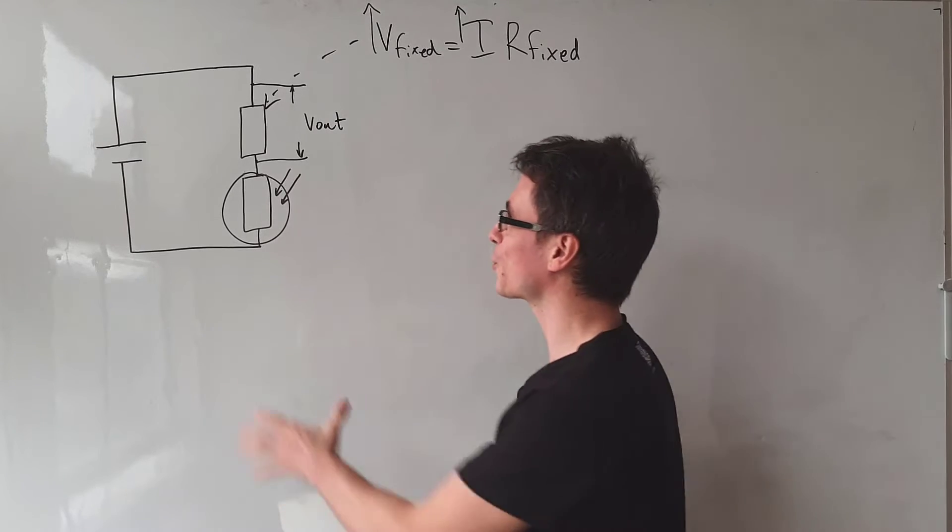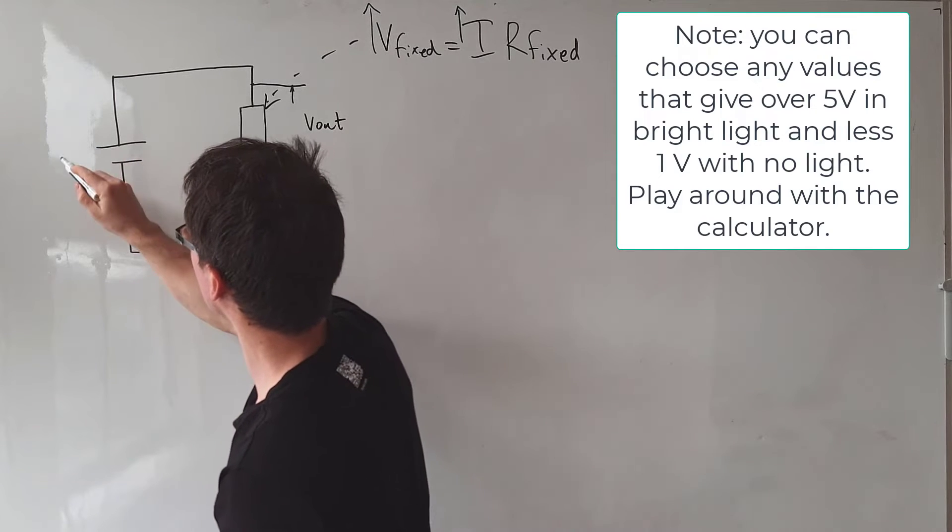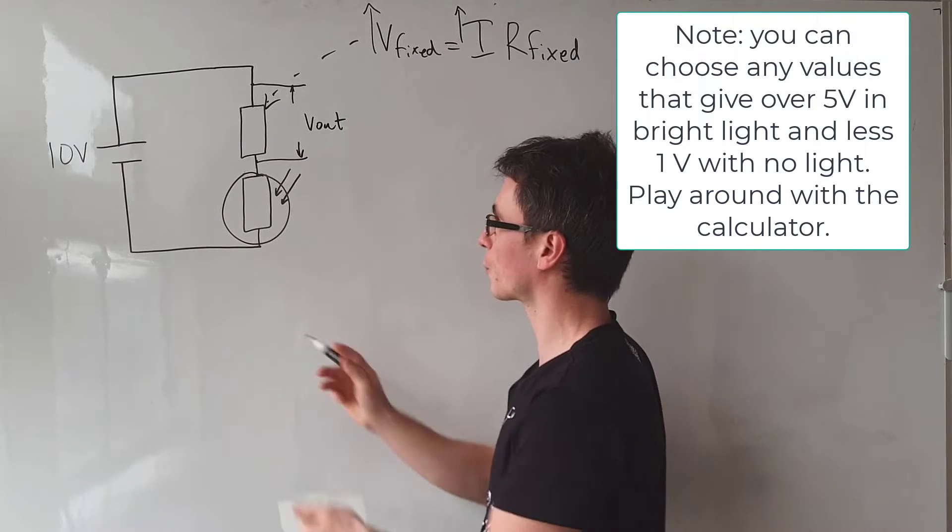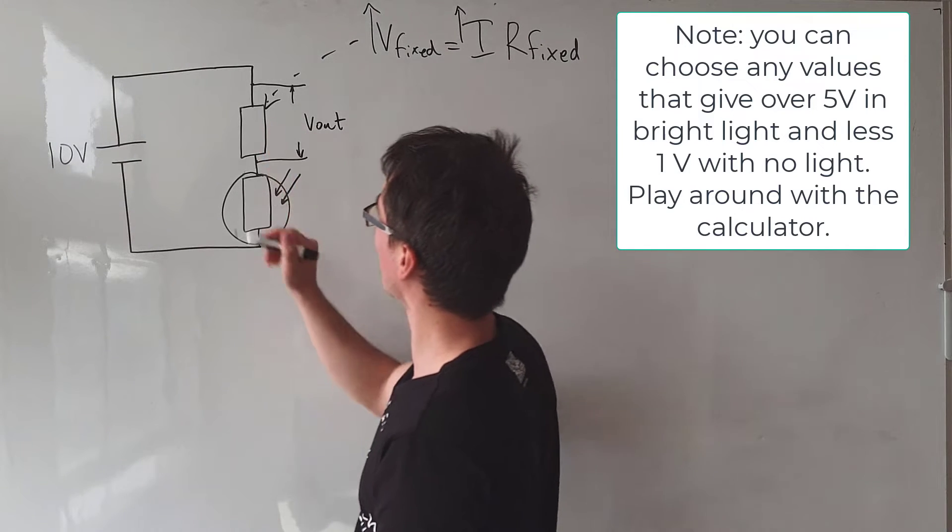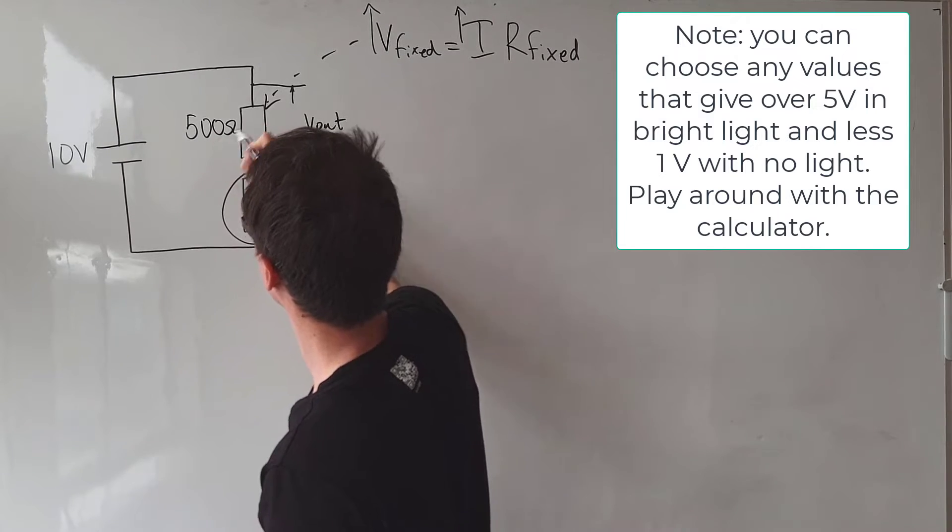Now this question is asking us to suggest values for the components. I'm going to say that the EMF is 10 volts and the fixed resistor is 500 ohms.